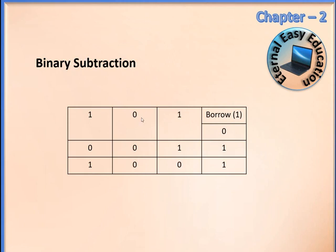I'm going to explain the truth table — the rules which should be followed to do binary subtraction. If the number is 1 and 0, the difference is 1. If it is 0 and 0, it is 0. If it is 1 and 1, it is 0. The complicated case is 0 and 1: we have to borrow 1, and the difference is 1.